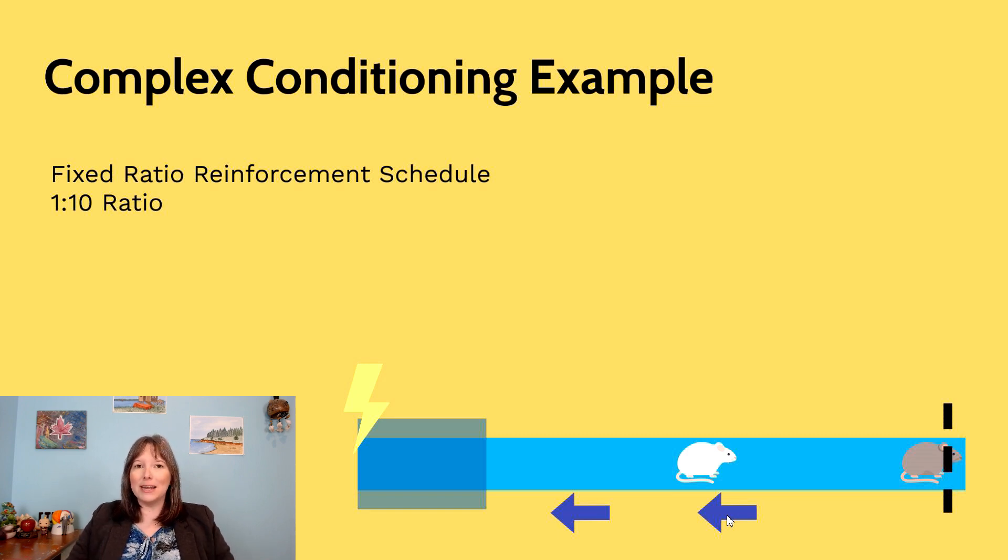Or even if they adjust this so the photo beam turns off for only one minute and they have a fixed ratio where they have to cross the photo beam 15 times, the rats will learn that as soon as the conveyor belt starts running they cross the photo beam as many times as they can and it'll turn off. And then they can relax and enjoy their environment and they just avoid the dark box.